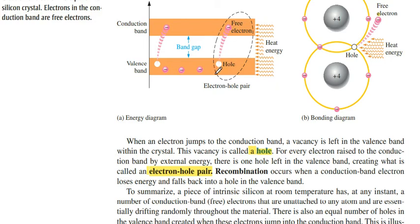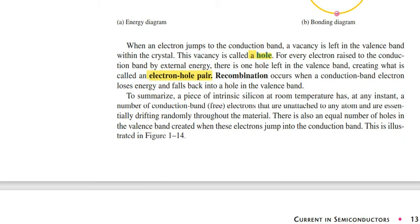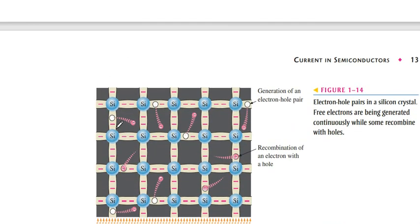This electron-hole pair is shown in this paragraph. In the crystal, this is a normal process, and there is no net charge on the silicon crystal because the total number of electrons and protons are always the same. Electrons also move randomly from one bond to the other bond continuously.